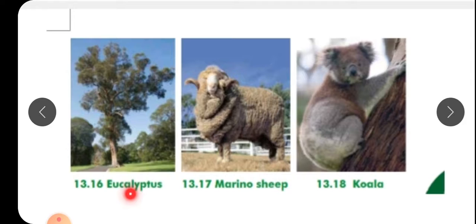This plant is called eucalyptus. Eucalyptus means nilgiri. Nilgiri ka tel banta hai, nilgiri ke plants.